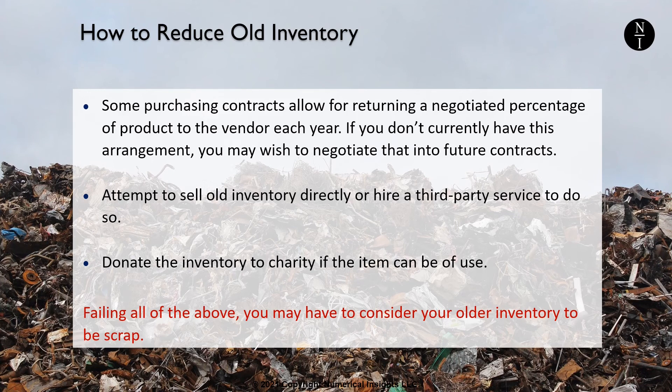I'll conclude this topic with a few ideas on how you can reduce the amount of inventory you have in stock. Some purchasing contracts allow for returning a negotiated percentage of product to the vendor each year. If you don't currently have this arrangement, you may wish to negotiate that into future contracts. If that's not an option, you can attempt to sell this inventory directly or hire a third-party service to do so. You can donate the inventory to charity if the item can be of use — excess rubber gaskets are probably not useful to most charities, but older furniture and household supplies would be more appropriate for a donation.